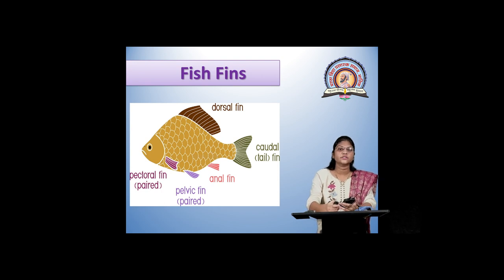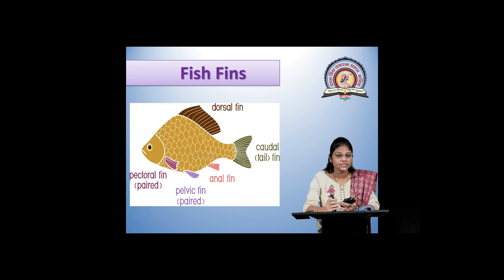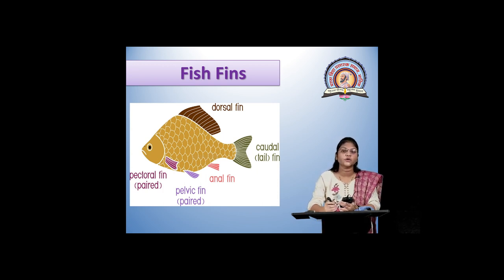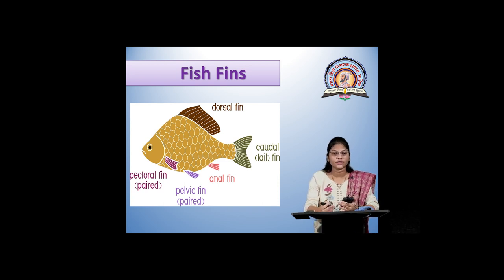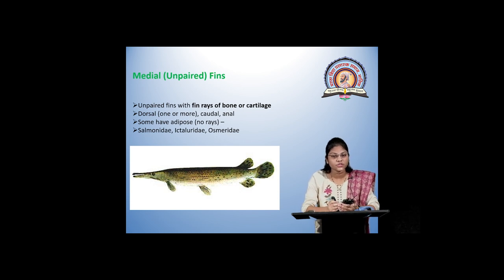The next organ is fish fins. These are important organs seen only in fishes. There are two types of fish fins: some are unpaired and some are paired. Unpaired fins include the dorsal fin, caudal fin, and anal fin. Paired fins are like the pelvic fin and pectoral fin. Fins are adapted for the movement of fishes and are important while swimming, also for giving direction during swimming.